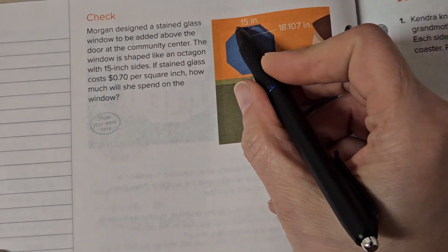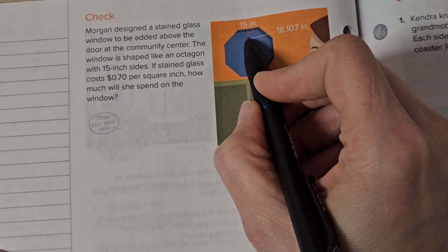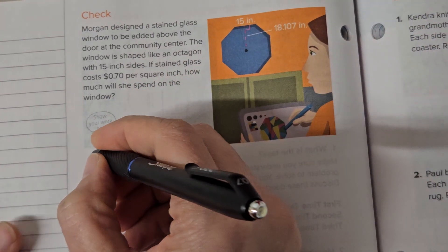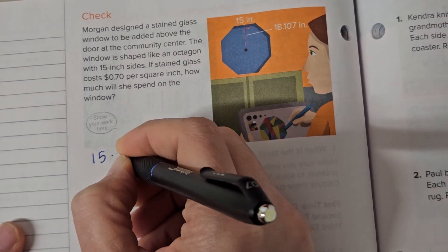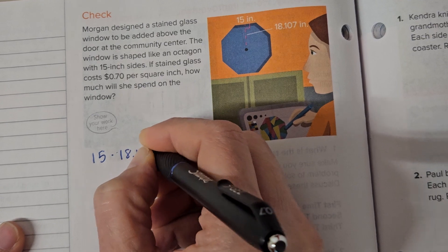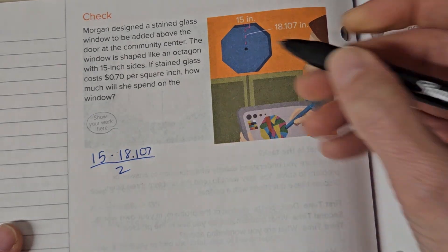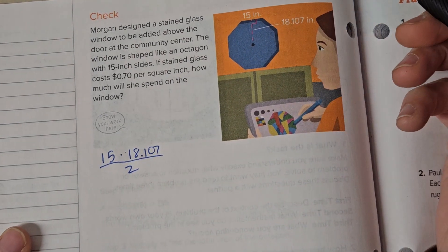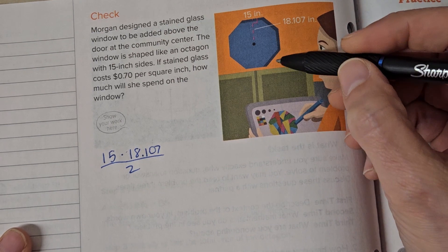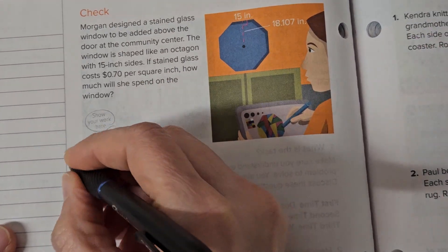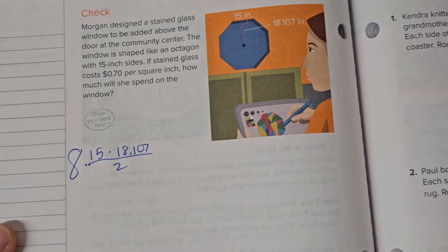So the area is going to be 15 times the height, 18.107. 15 times 18.107, divide 2. That's the area of one of the triangles. Now how many triangles we have? Yeah, 8, because there are 8 sides. So we're going to times all of that by 8.